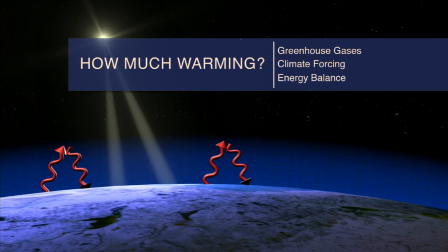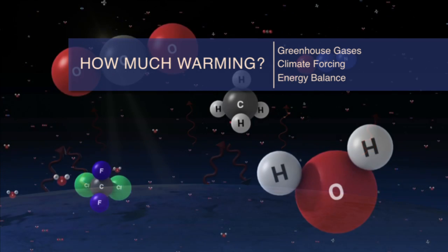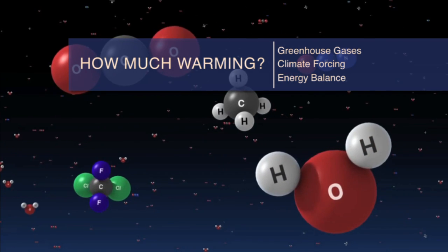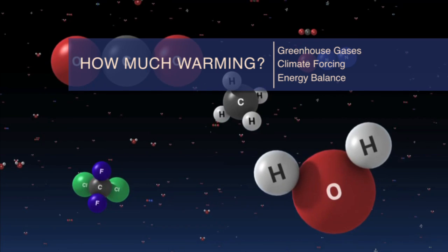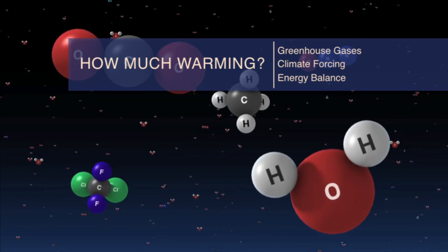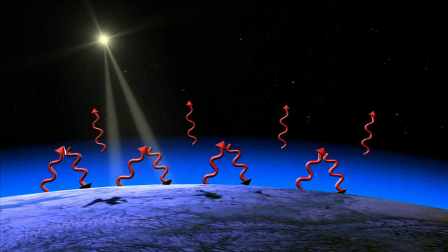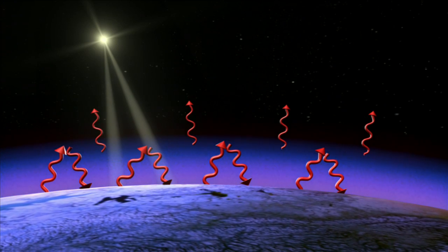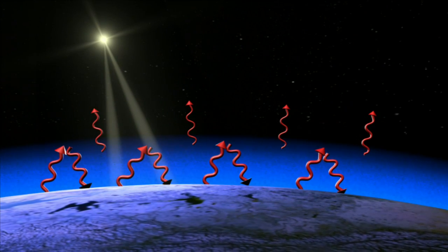How much are human activities heating Earth? Greenhouse gases are referred to as forcing agents because of their ability to change the planet's energy balance. A forcing agent can push Earth's temperature up or down.